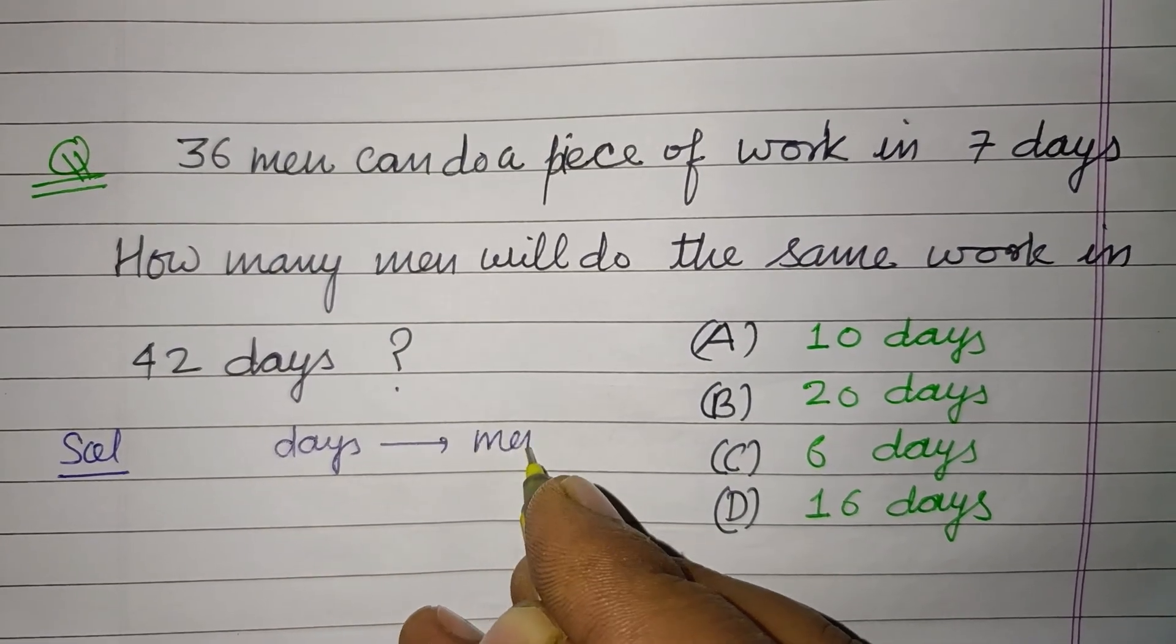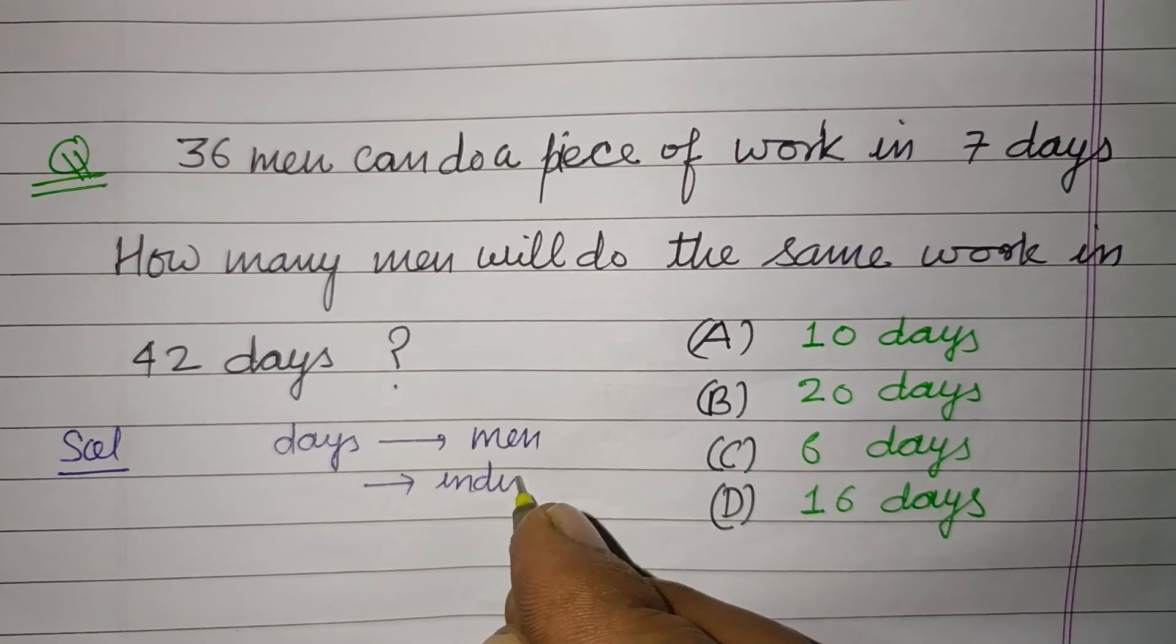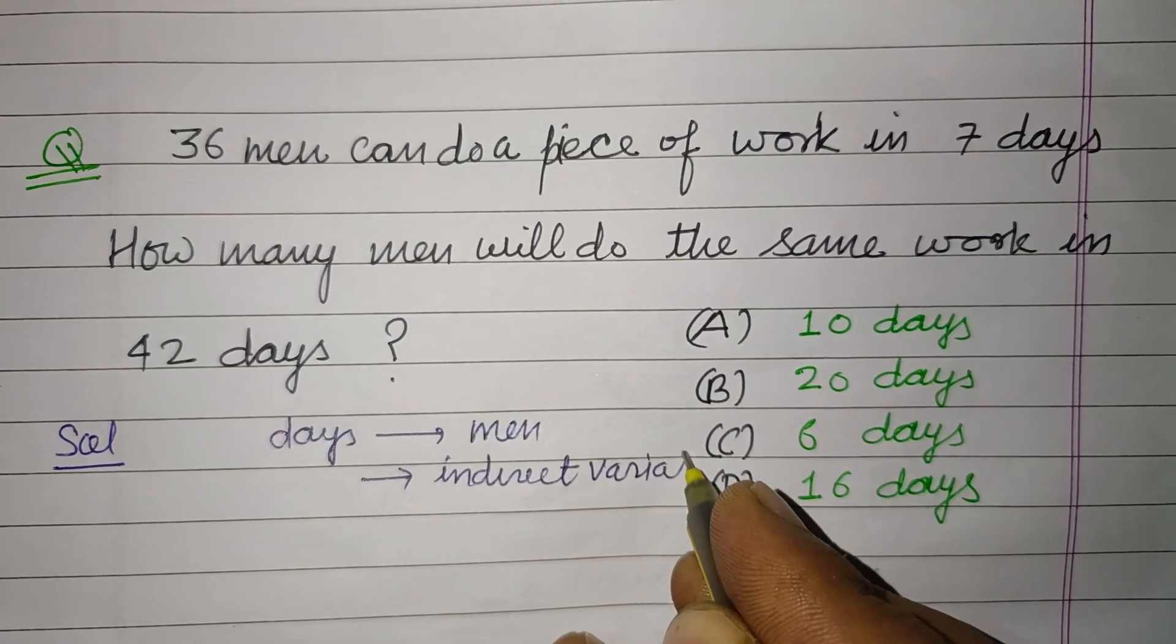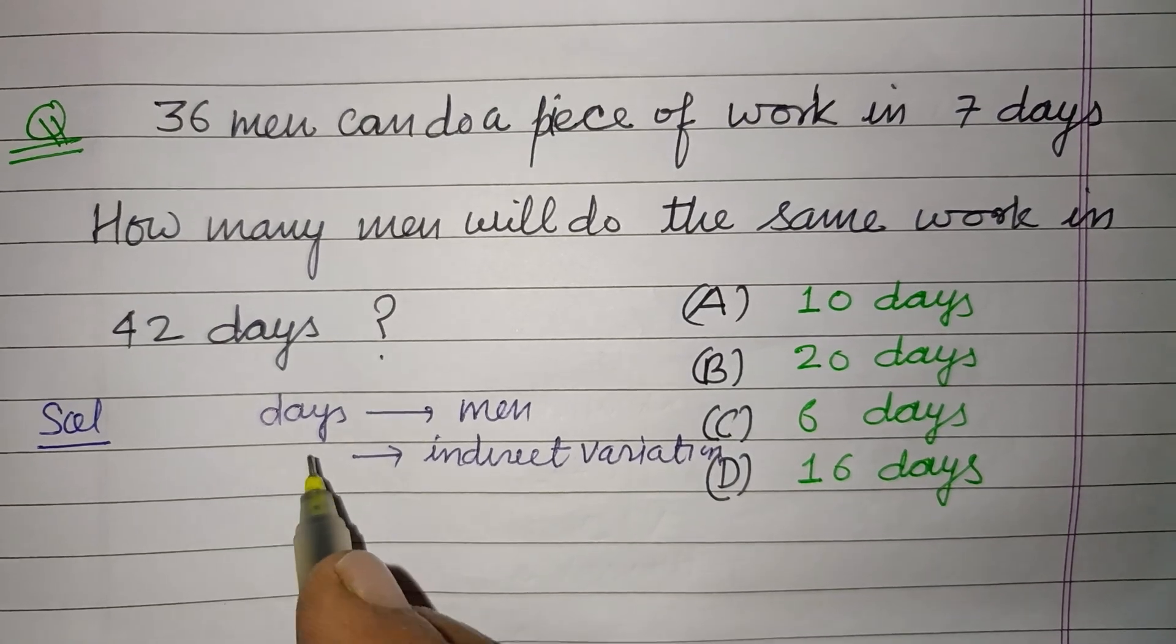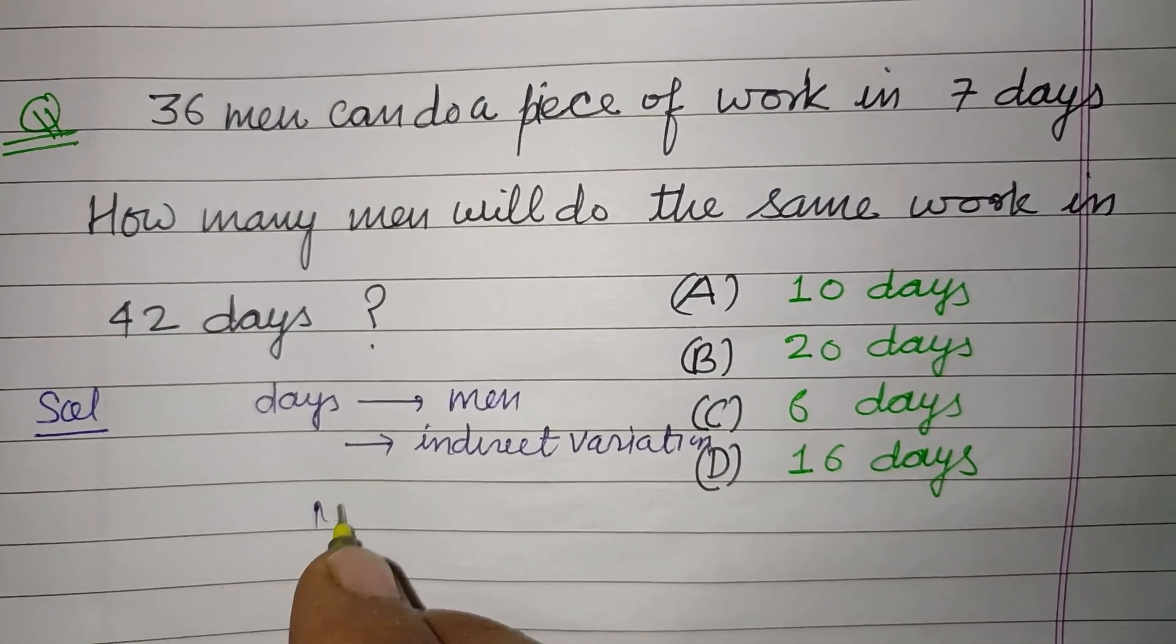It is an indirect relation, indirect variation. Time and men always have indirect variation. So here is men and here is work in days.